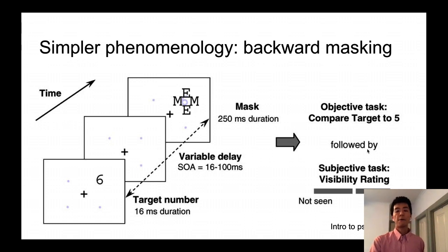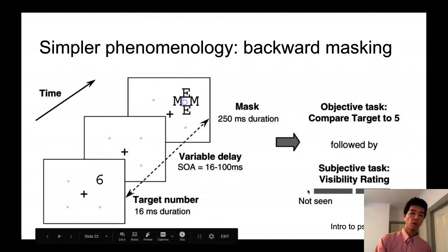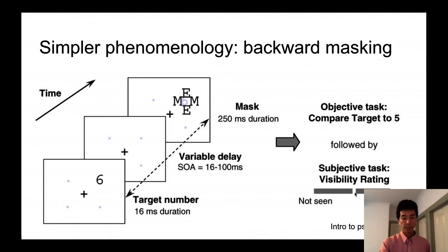And then after saying that it was above five or below five, then they also asked people to report the subjective task, recording the report of the visibility, how visible the number was from not seen to maximal visibility. And in their case, they asked people to move the cursor in a one-dimensional manner.